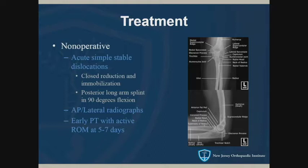Acute simple dislocations without associated fracture are typically stable. Treatment is closed reduction, immobilization, and splinting at least 90 degrees, because as the elbow starts to straighten out, instability events become more common. For a posterior dislocation, you'll generally pull in-line traction, correct any medial-to-lateral translation of the olecranon, flex the elbow up, apply posterior pressure on the olecranon to pull it forward, and you'll feel a satisfying clunk.